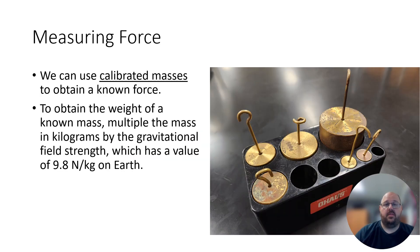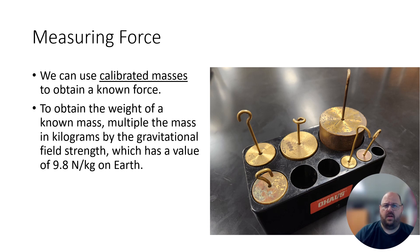The first thing we need to do is get some known forces, and the easiest way to do that is to go to the physics storeroom and get some calibrated masses. Whenever you use these, you want to call them calibrated masses — they have a known mass carefully calibrated by a manufacturer in a lab. We can obtain the weight, or gravitational force, simply by multiplying the mass in kilograms by the gravitational field strength. On Earth, the gravitational field strength is 9.8 newtons per kilogram — write this value down, it's a very important number.